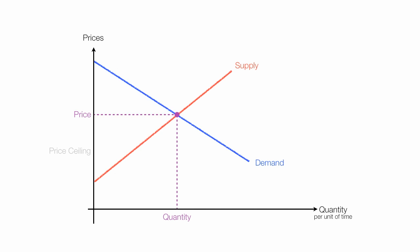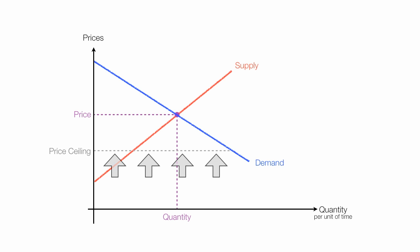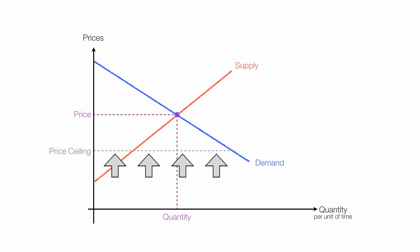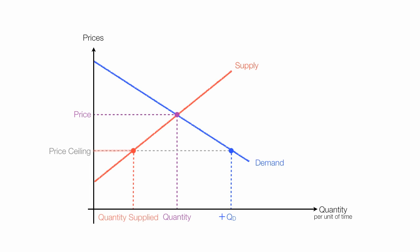With a price ceiling, prices are set below market price, so there are market forces trying to push the price up. But government regulation pushes it back down. To determine quantity demanded, follow the price ceiling until it touches the demand curve — this is quantity demanded. For quantity supplied, follow the price ceiling to the supply curve and then down — this is quantity supplied. Notice that with a price ceiling, quantity supplied has decreased and quantity demanded has increased.